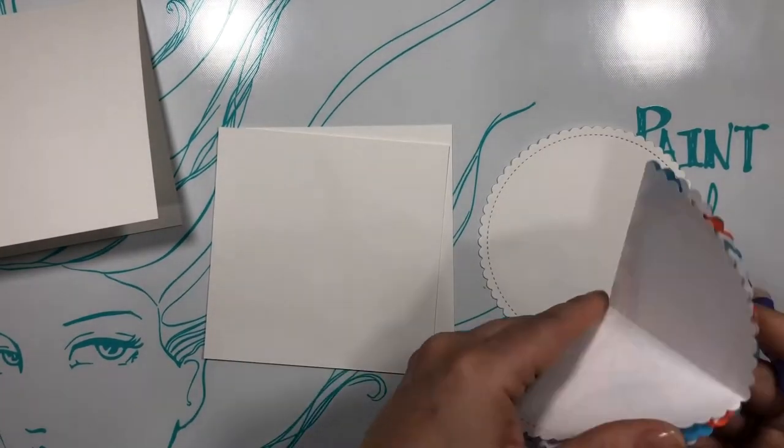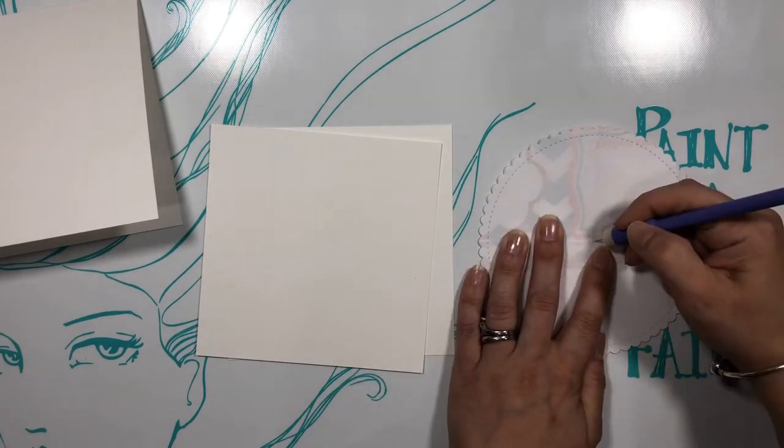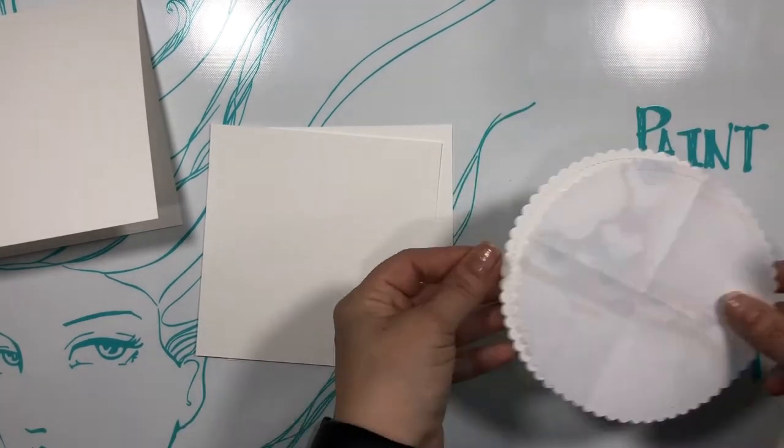Now once I figured out the center all I'm going to do is take that piercing tool and poke right through both layers of the paper.